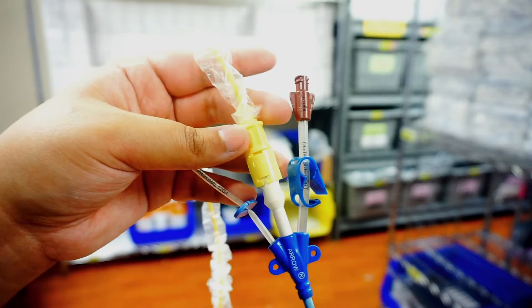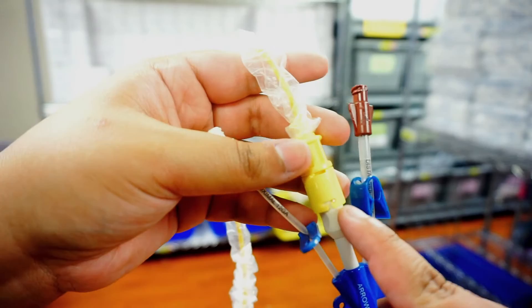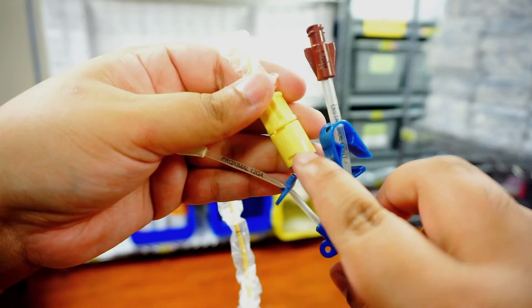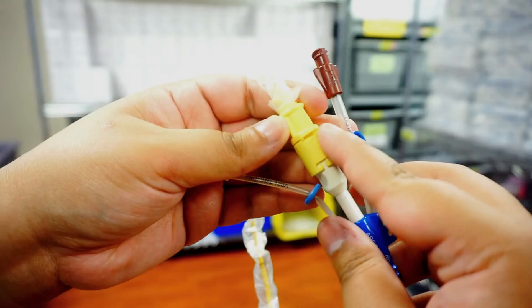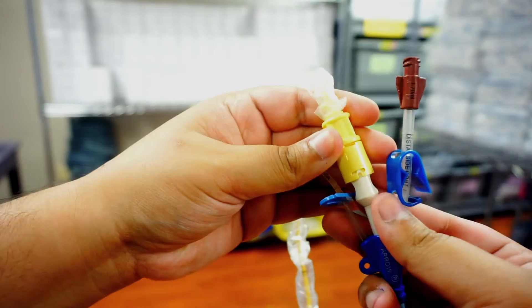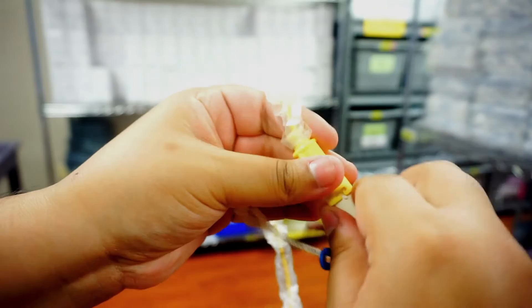So right now, what's keeping my Swan from being pulled out is this little divot that we have locked in place. If I was going to DC my Swan and I wanted to keep my cordis, what I would do is I'm going to move that divot to the center and then I could pull this whole thing out and leave the cordis in.